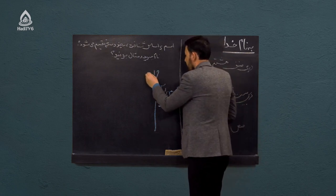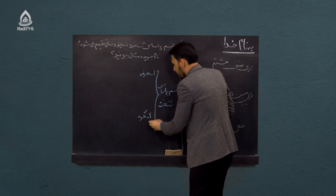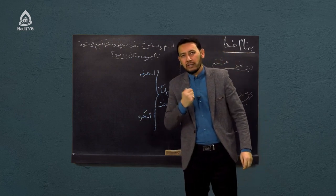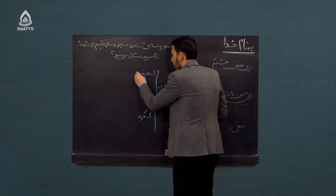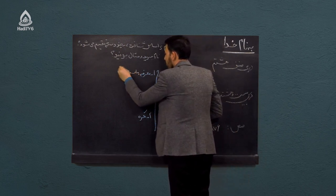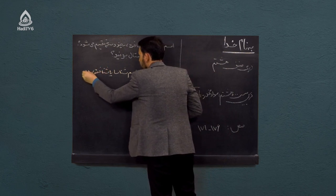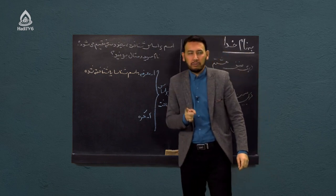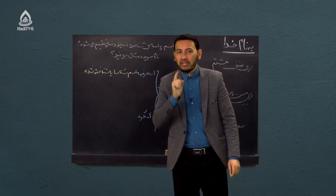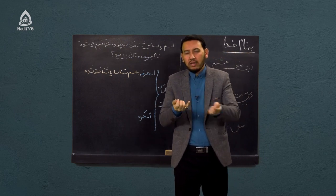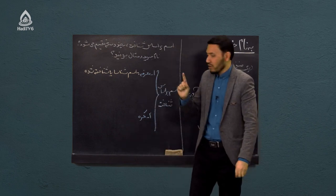یا اسم معرفه است یا اسم نکره. بر اساس شناخت ما دو گونه اسم داریم. اسم معرفه را ما گفتیم اسم شناسا یا شناخت‌شده. هر زمانی که ما یک اسمی را به کار ببریم و آن اسم برای مخاطب، برای شما شاگرد مکتب حادی، روشن باشد، مشخص باشد، شناخته‌شده باشد، آن اسم را تحت عنوان اسم معرفه در دستور زبان یاد می‌کنیم.